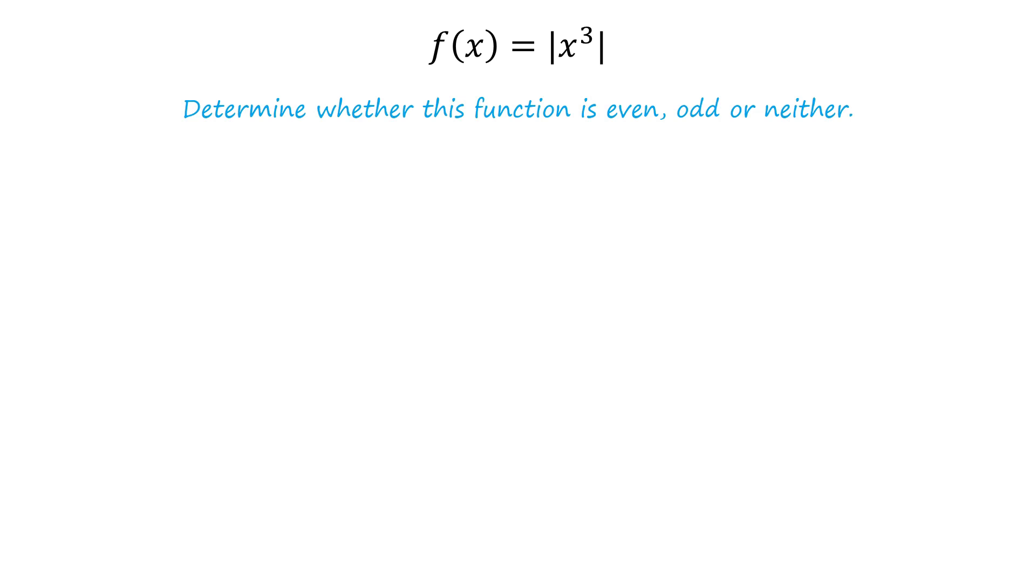Let's walk through the solution. The answer to this problem is that f of x is an even function. To check whether the given function is odd or even, first we need to determine f of negative x. For that we will substitute negative x in place of x in f of x.